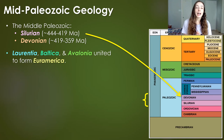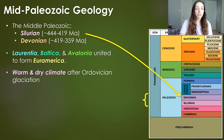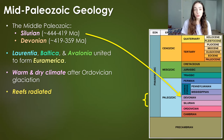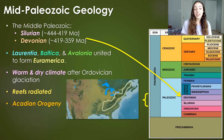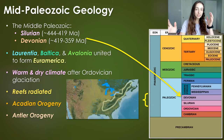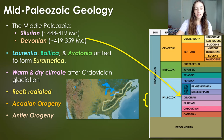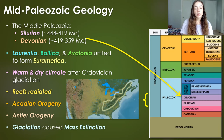In terms of the geologic events that happened in the mid-Paleozoic, we had major continental land masses — Laurentia, Baltica, and Avalonia — collide to form Euramerica. We also had warm and dry climates after the Ordovician glaciation, reefs that radiated due to these warm conditions, the Acadian orogeny as well as the Antler orogeny at different margins of Laurentia — or Euramerica at the time — building mountains. Orogenies, by the way, are mountain building events.